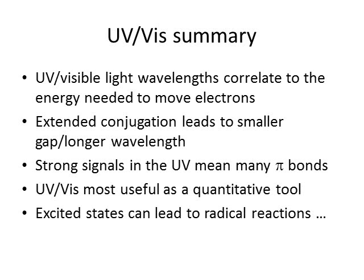To sum up UV-Vis: ultraviolet and visible wavelengths correspond to energies needed to excite electrons from the HOMO to the LUMO. The wavelength of light needed depends on the gap between those orbitals. There's a smaller gap with extended conjugation, corresponding to longer wavelength light. With a lot of conjugation you see a strong signal in the UV. Qualitatively, UV tells you there's extensive conjugation; quantitatively, it's very useful for measuring concentration. Understanding UV light is also important for discussing radical species, which involve single electrons.